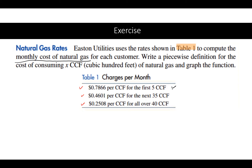If our usage is within the first five CCF (hundred cubic feet), we are charged at a certain rate per CCF. If we express CCF as x, then the function follows a linear form: f(x) = 0.7866x. So if x equals 1 we're charged 0.7866, and if x equals 2 we're charged 2 times 0.7866, and so on.